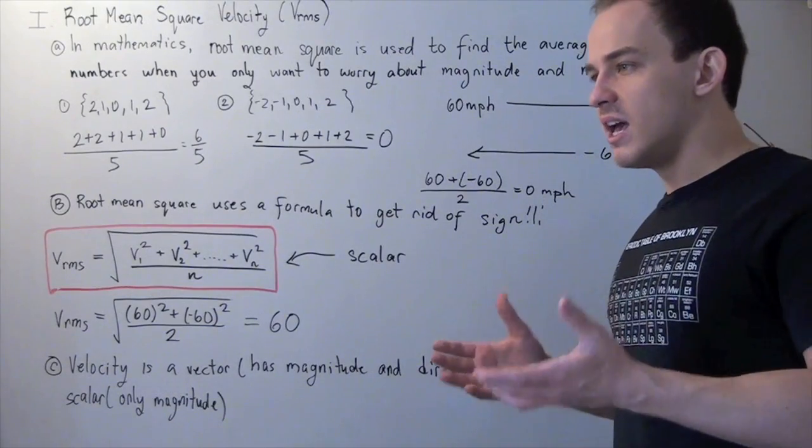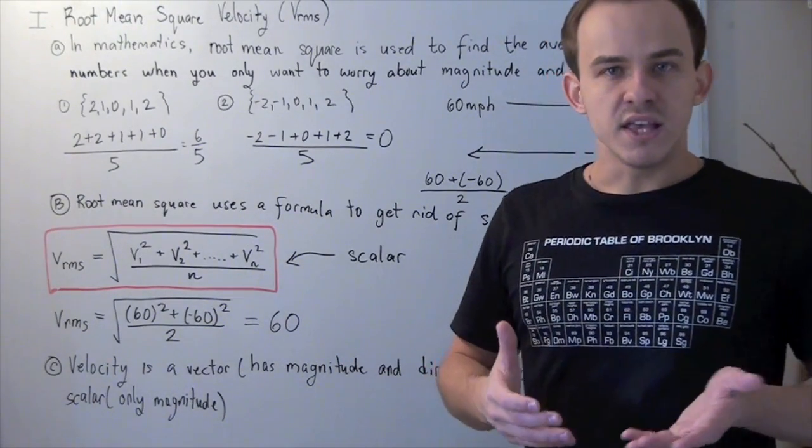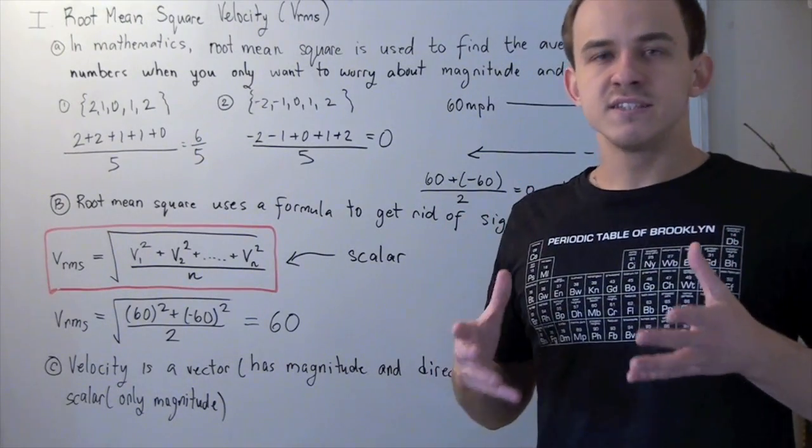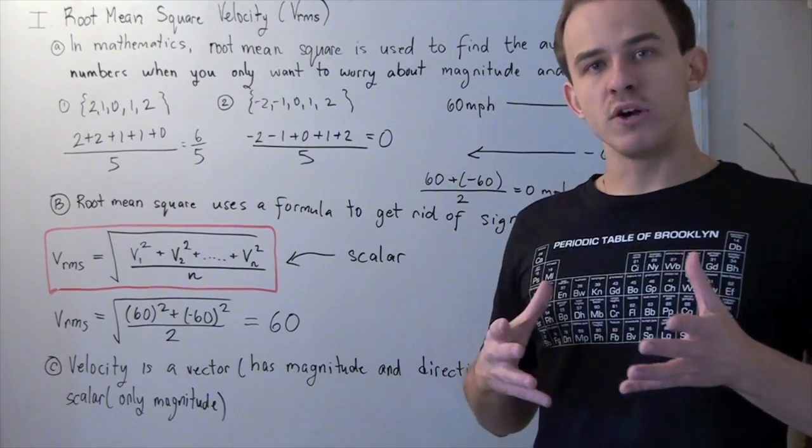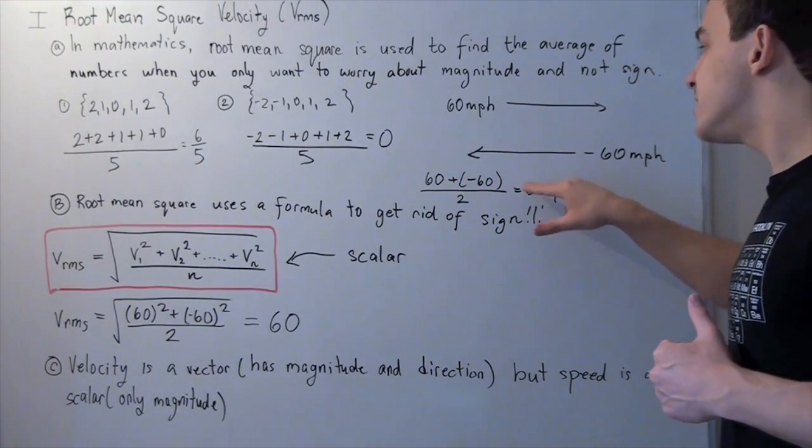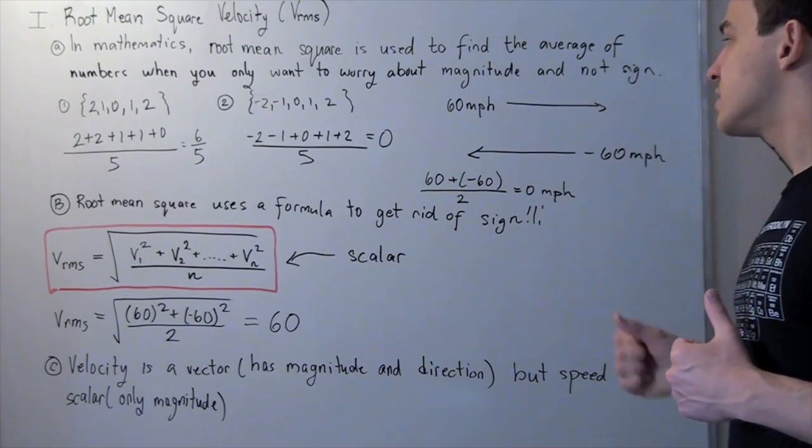Because if one car is going 60, and the other car is going 60, then the average must be 60. Well, if you use the formula to find the average from a mathematics point of view, you will see that it's 60 plus minus 60 gives you 0 divided by 2, which is 0.